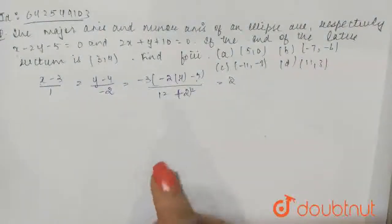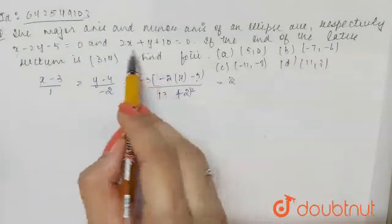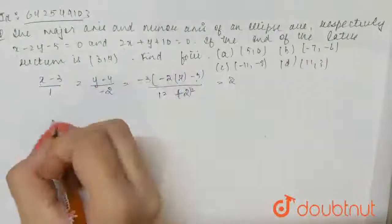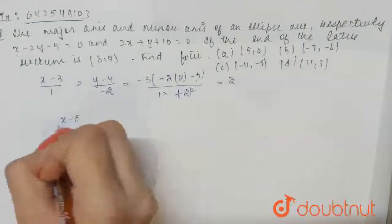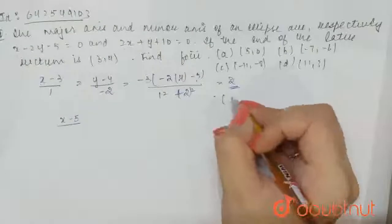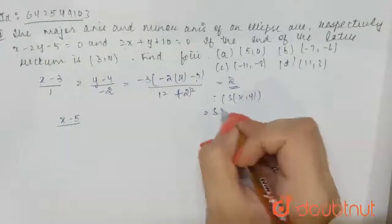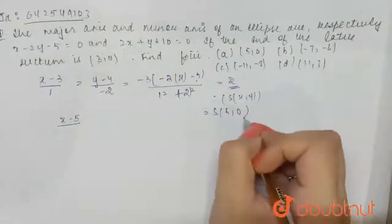So, another focus will be the image of S in this line, right? So, if we calculate this, this will be x minus 5, and because this point here is S x comma y, this will be S 5 comma 0, right?